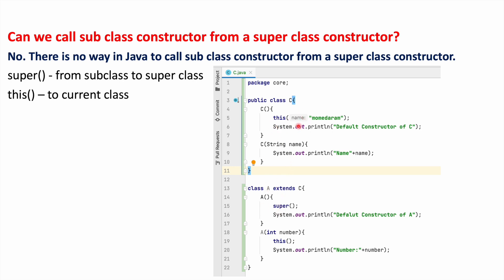But if you want to call class A's constructor from class C — where A is the subclass and C is the superclass — there is no way to do that. We cannot call a subclass constructor from a superclass constructor.